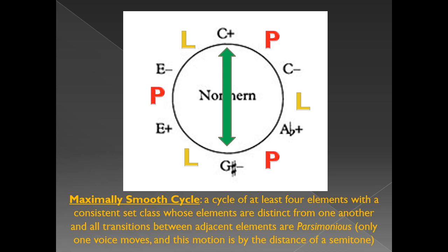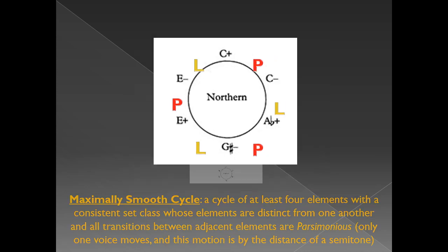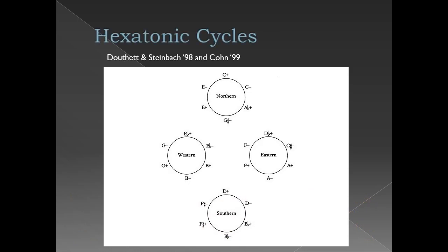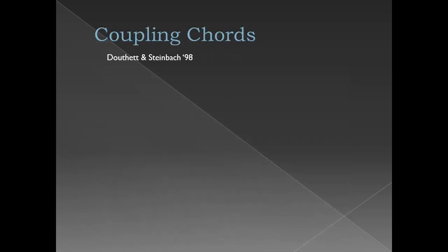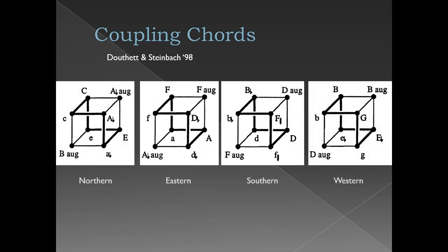By this point you're probably wondering what Northern means. This hexatonic cycle is actually one of four possible hexatonic cycles, which Cone arbitrarily labels Northern, Eastern, Southern, and Western. All six clangs in each cycle are made up of only six pitch classes, which can also be divided into two augmented triads separated by a semitone. Douthit and Steinbach represented this feature by showing the hexatonic cycles in relation with the two augmented triads that comprise their pitch class sets.